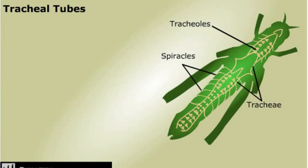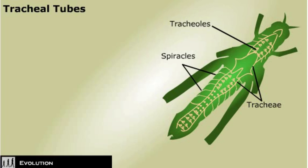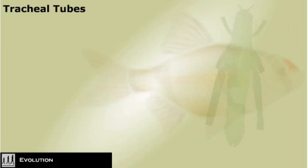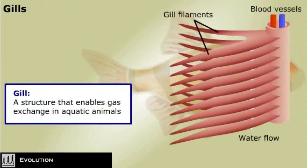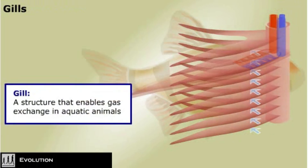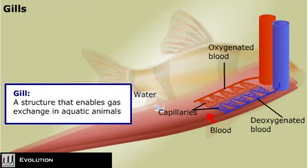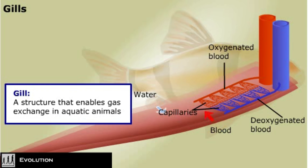The extensive branching system of the tracheae ensures that every body cell is close to a tracheole. Gas exchange through tracheae and skin surfaces works well for small animals like insects and worms. Larger organisms need a faster means of pumping oxygen. Most aquatic animals have structures called gills that are adapted for this purpose. Gills consist of slender filaments of epithelial tissue that contain branching capillaries, and gas exchange occurs between the surrounding water and the blood in the gills.